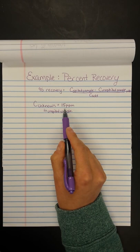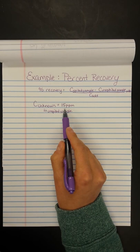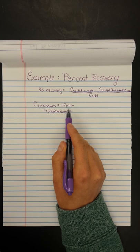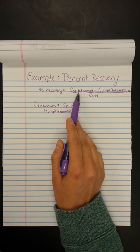So we're going to take our same sample that we ran and that we determined to have a concentration of caffeine of 15 ppm, and we're going to add a little bit of standard caffeine. We call this a spike or a fortification. So let's say that we add 5 ppm of caffeine to my sample.